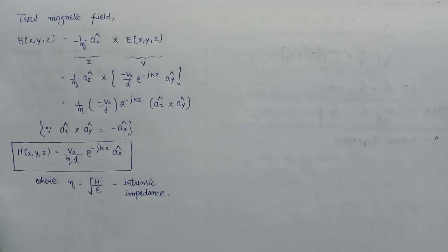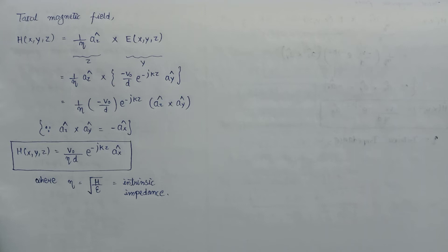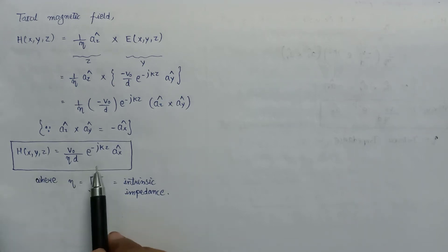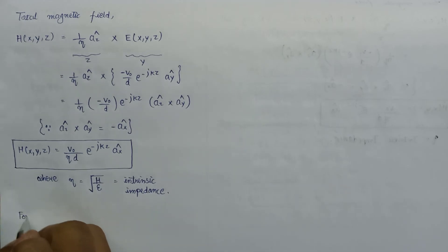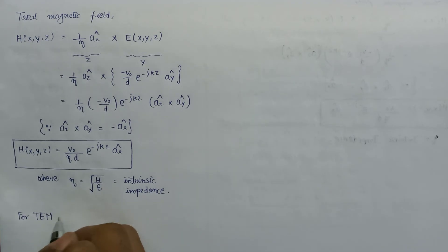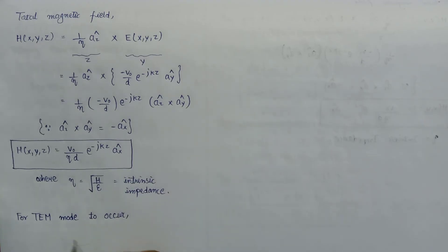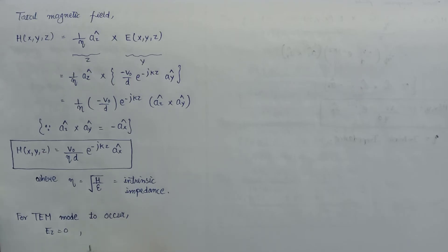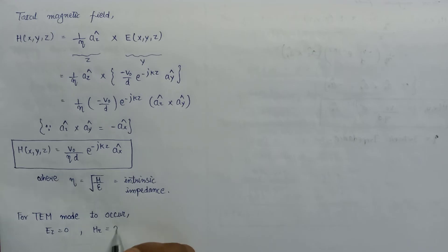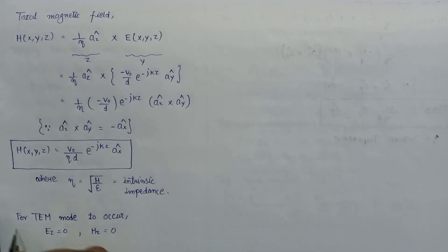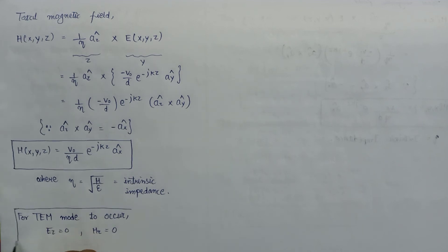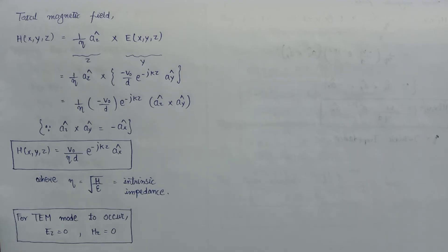So till now we have discussed the general solution for the Helmholtz equation for wave propagation in TEM mode, the total electric field expression, and the total magnetic field expression. For TEM mode to occur, the component of the electric field in the z direction, H_z, must also be equal to zero — this is the basic condition for TEM mode. Now let us look at the parameters associated with TEM mode.